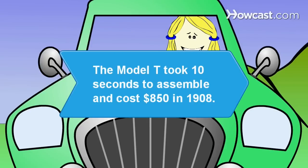Did you know? The Ford Model T, the first mass-produced automobile, was assembled at a rate of one car every ten seconds and sold for $850 in 1908.